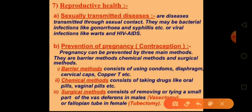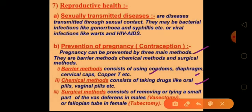Pregnancy can be prevented by three methods: barrier methods, chemical methods, and surgical methods. Barrier methods stop sperm from entering the vagina and consist of using condoms, cervical caps, copper-T, etc. Chemical methods involve taking drugs such as oral pills or vaginal pills.